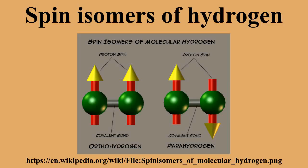Molecular hydrogen occurs in two isomeric forms: one with its two proton spins aligned parallel, the other with its two proton spins aligned anti-parallel. These two forms are often referred to as spin isomers, since they differ not in chemical structure but rather in nuclear spin state. Parahydrogen is in a lower energy state than is orthohydrogen.